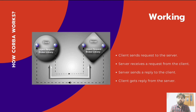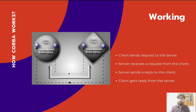Now let's understand the actual working of CORBA. Consider two machines: the first is the client side machine and the other is the server side machine. Both the client and server have an Object Request Broker library. First, the client sends a request to the server. The server receives the request from the client, then the server sends a reply or acknowledgement back to the client, and the client gets a reply from the server. This is how CORBA actually works.